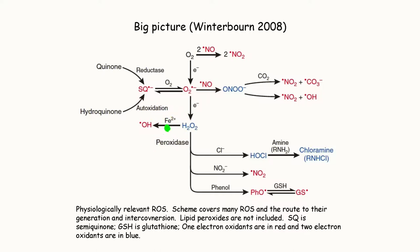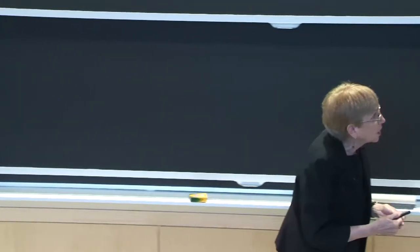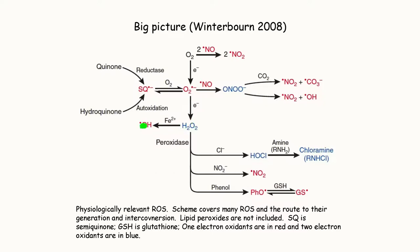If you have iron(II) around — this goes back to the connection to iron homeostasis from module six — this is called Fenton's chemistry, and you produce hydroxide radical. That's the third reactive species. Hydrogen peroxide in the presence of chloride with myeloperoxidase can form hypochlorous acid, which can chlorinate amino acids, sugars, and other things, giving you rampant chlorination inside the cell. This cartoon also includes reactive nitrogen species, but we're only focusing on reactive oxygen species.